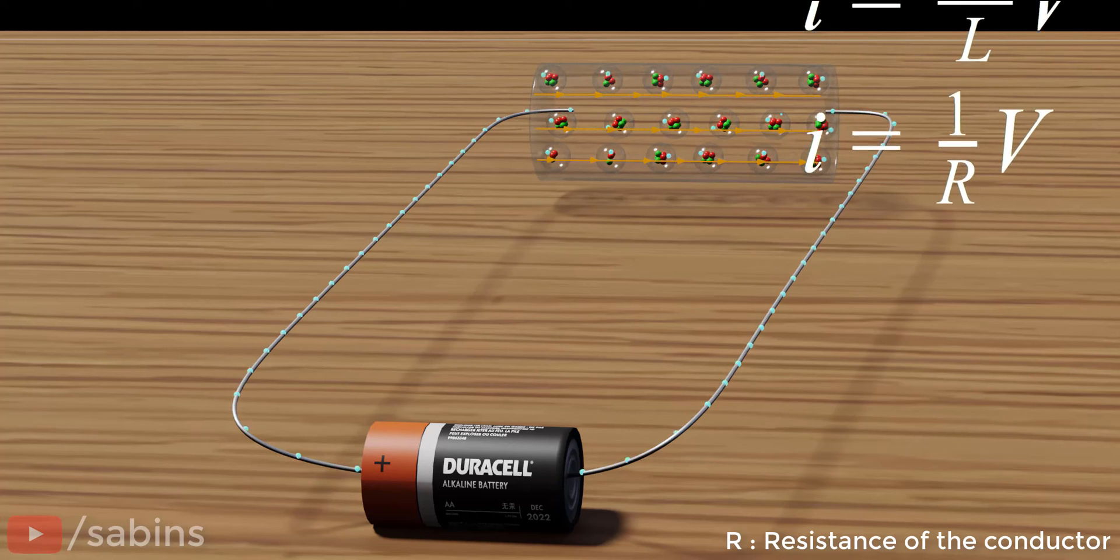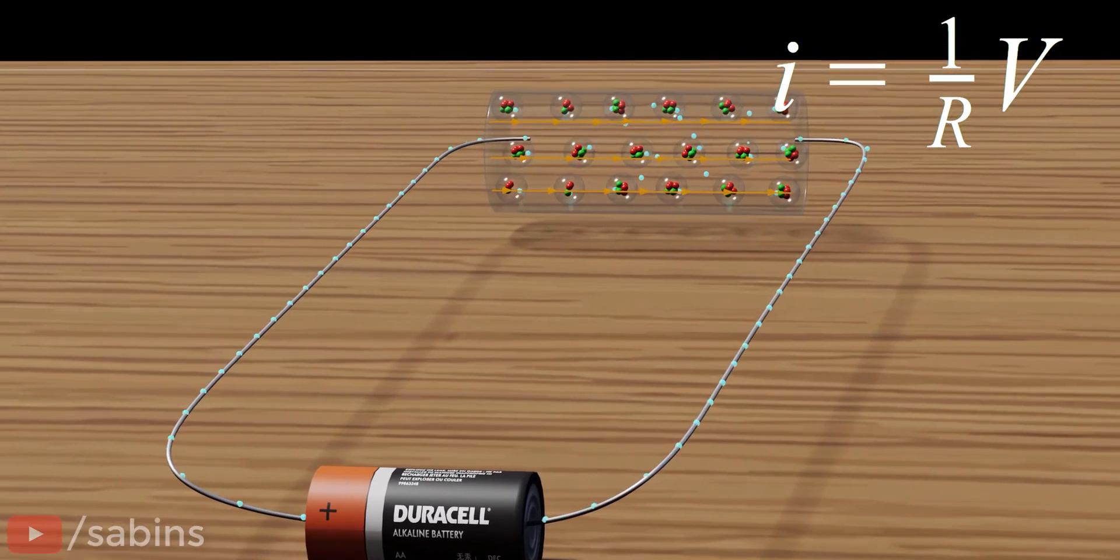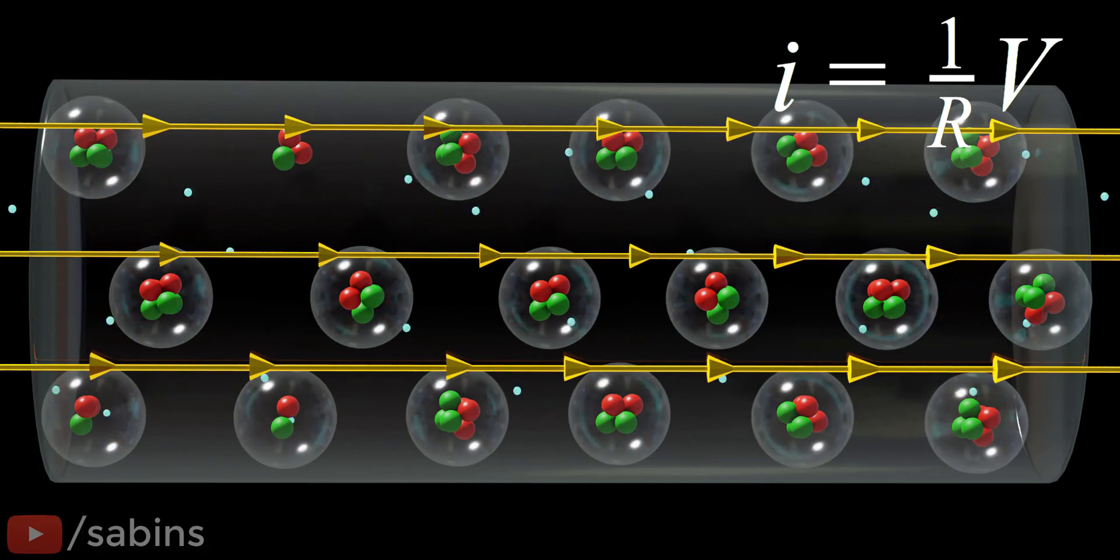But remember, here we used the laws of classical physics to derive the drift velocity. Strictly speaking, the behavior of electrons in a metal is a quantum mechanics phenomenon. By using the classical physics method, we derived highly compromised results, yet it works well in most of the cases.